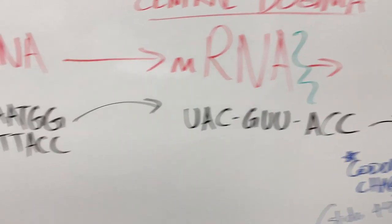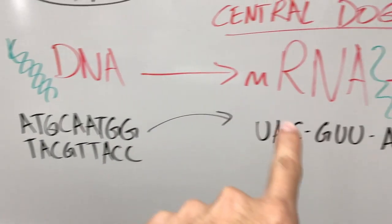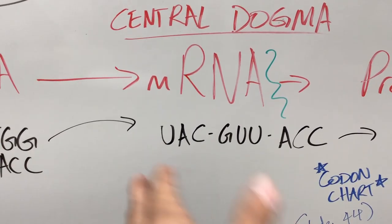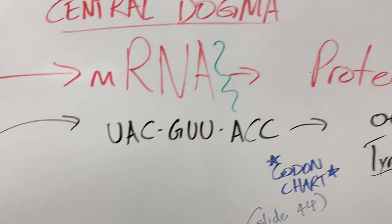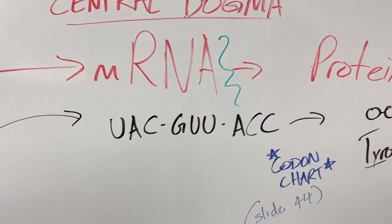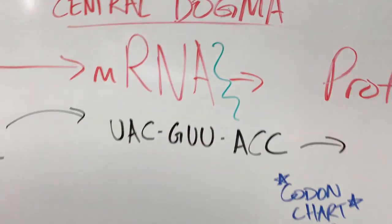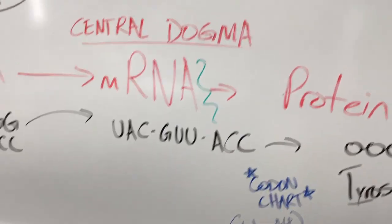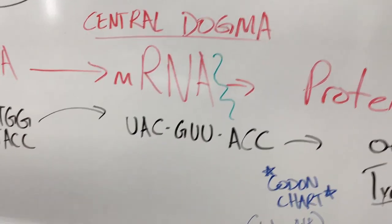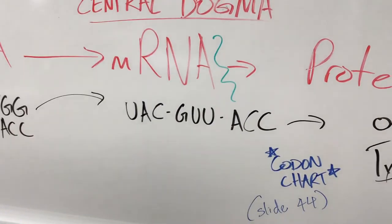single-stranded. So we transcribed that top side over here, and we have it in threes. Those are called codons, as you know from the vocabulary. And so those codons are read in threes. The messenger RNA molecule is read in threes. Every three nitrogen bases is a codon.